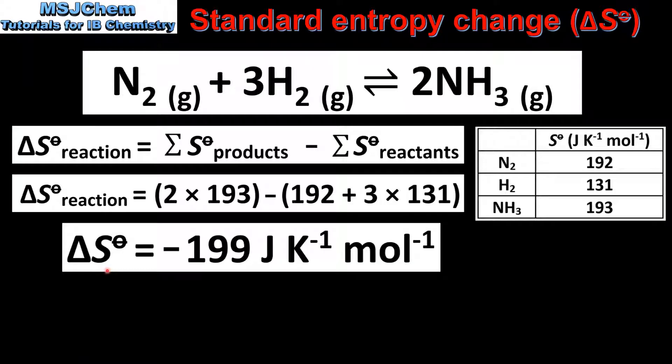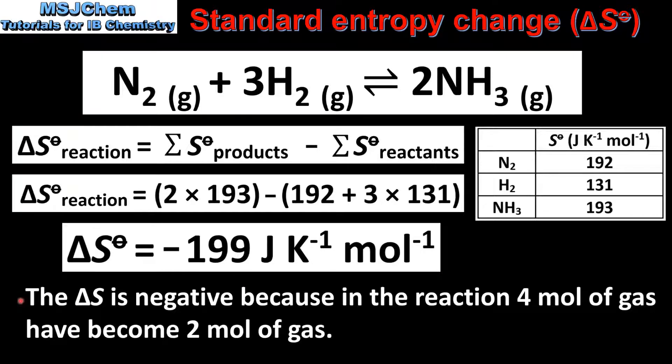Which gives us a standard entropy change of negative 199 joules per Kelvin mole. The change in entropy is negative because in the reaction 4 moles of gas have become 2 moles of gas, which is a decrease in entropy.